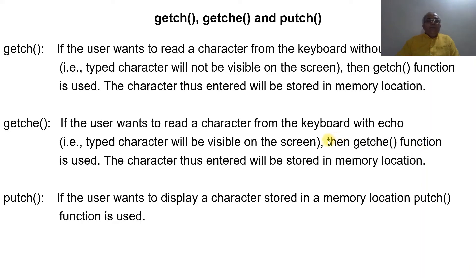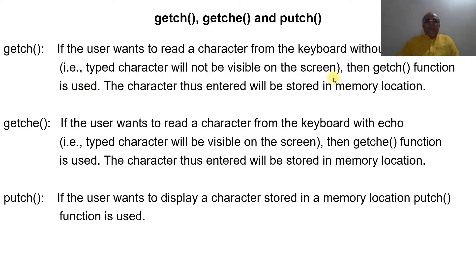In this video we will address getch, getche, and putch. The getch function is used when the user wants to read a character from the keyboard without echo — that is, the typed character will not be visible on the screen. The character entered will be stored in a memory location.